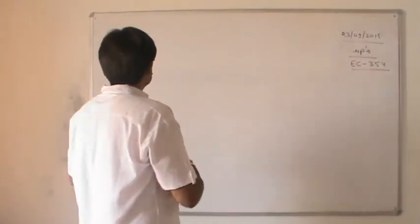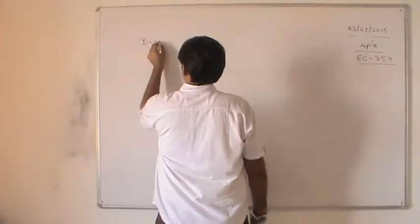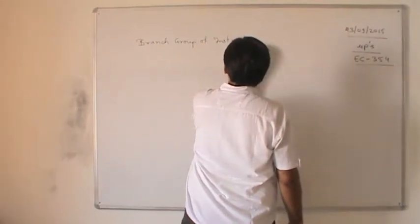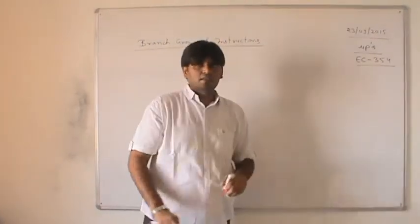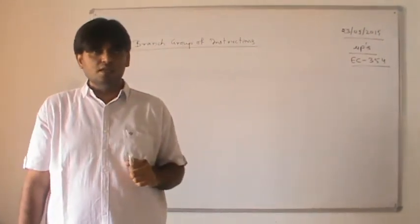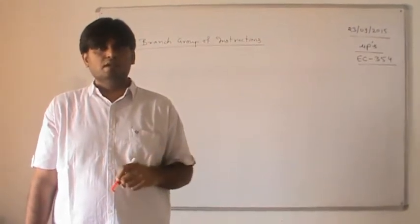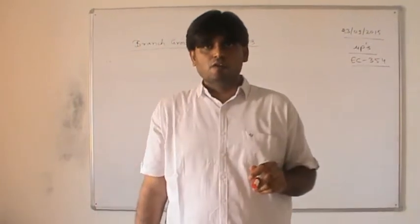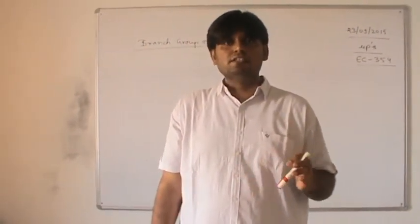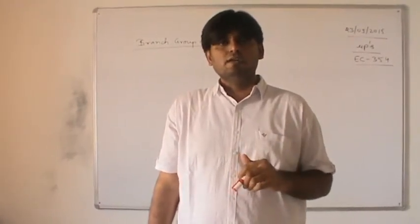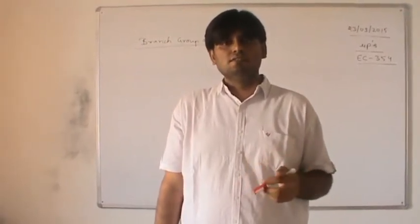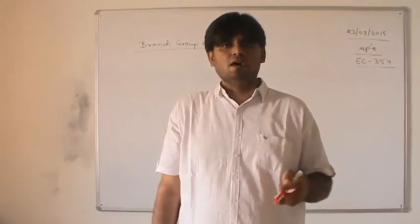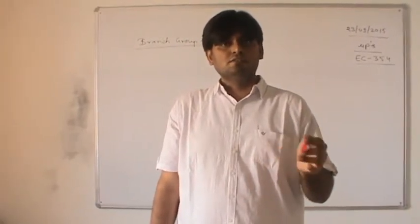Let us start with the branch group of instructions. As the name suggests, the branch group of instructions basically contains jump instructions and call instructions. Normally when we write a program for the 8085 microprocessor, there are many instances where we want to change the execution of the program — for example, when we are comparing two numbers and we want to jump to another part of the program if the comparison is true.